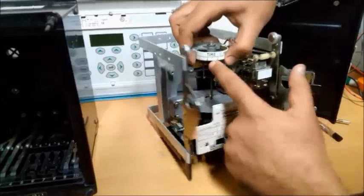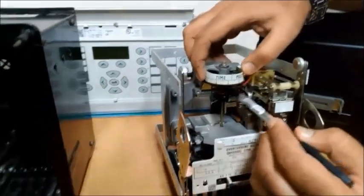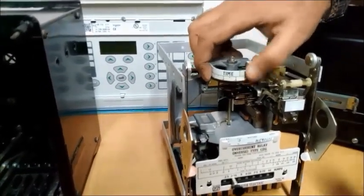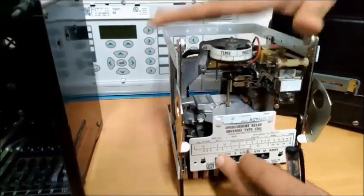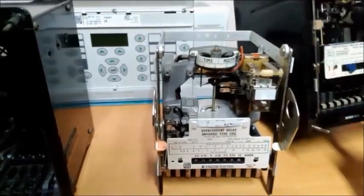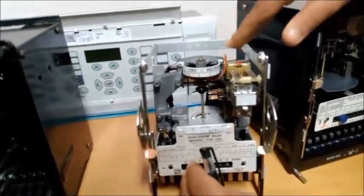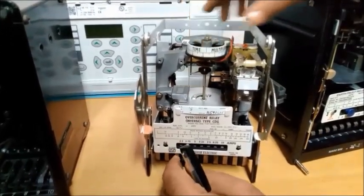So here you can see there is some value. You can see here. That is our time multiplier setting. That is TMS. Now we set already 0.3 seconds. And our current settings I already set here is 0.75 amps. So that is our set current settings and that is our TMS.